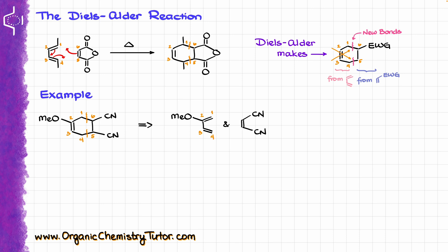In the product there will be only one double bond between 2 and 3, but in the starting material the diene has two double bonds. Likewise, between carbons 5 and 6, there is a double bond in the dienophile connected to the electron-withdrawing groups. So whenever you're predicting your starting materials, remember that you are not just ripping the molecule apart, but you're also moving the electrons around to recreate those double bonds that you had in your starting materials to begin with.